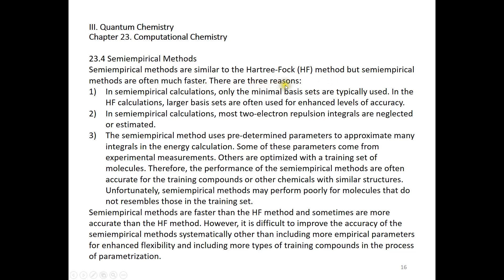There are three reasons. Reason 1: in semi-empirical calculations, only the minimal basis sets are typically used. In the Hartree-Fock calculations, larger basis sets are often used for better accuracy. Reason 2: in semi-empirical calculations, most two-electron repulsion integrals are simply neglected or estimated without doing the actual calculations.